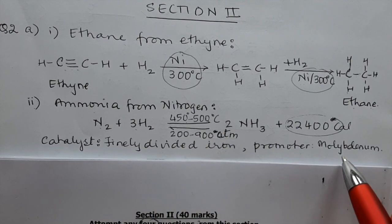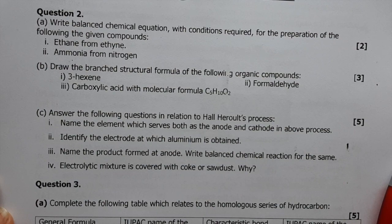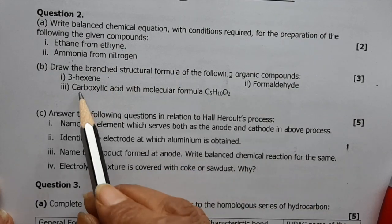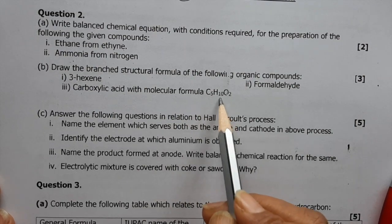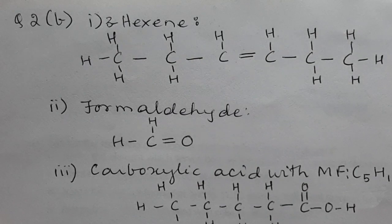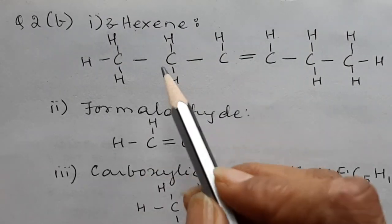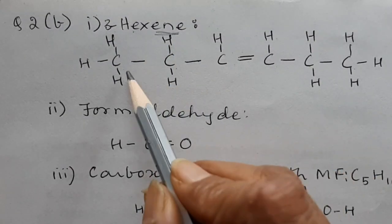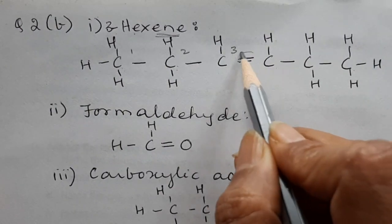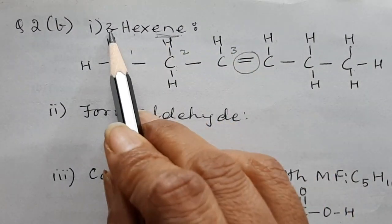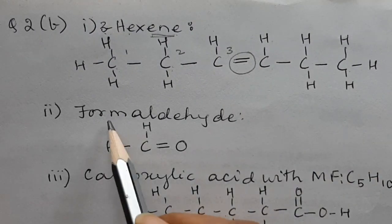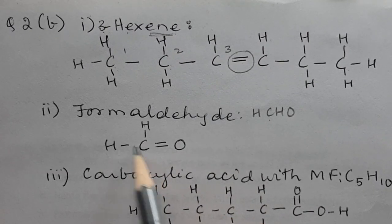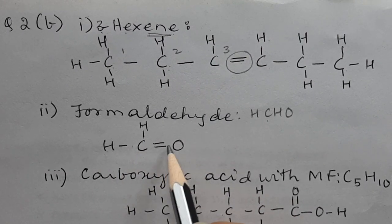Question 2b: Draw the branch structural formula. (i) Hex-3-ene: six carbons with a double bond at the third carbon — draw carbons 1 through 6 with a double bond between C3 and C4. (ii) Formaldehyde (HCHO): carbon with two single bonds to hydrogen and a double bond to oxygen — draw C with H, H, and =O.